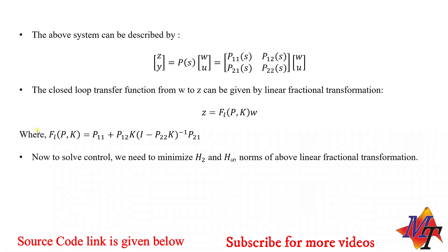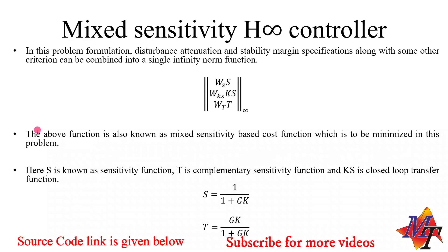The lower Linear Fractional Transformation is defined as: F_L = P11 + P12 * K * (I - P22 * K)^(-1) * P21. This is a transformation function which needs to be minimized. If we calculate the H2 norm of this function, we get an H2 controller transfer function, and if we minimize it through the H-infinity norm, we get an H-infinity controller transfer function. This is how H2 and H-infinity controllers work.